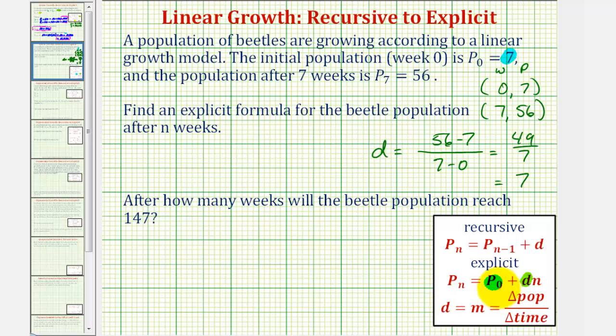Now for our explicit equation, we have pₙ = p₀, which is 7, plus d times n. We know d is 7, so we have pₙ = 7 + 7n.